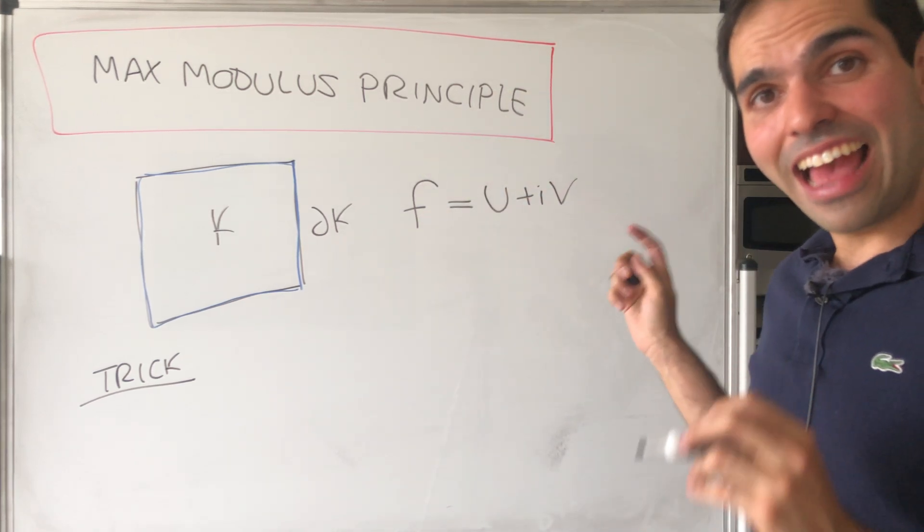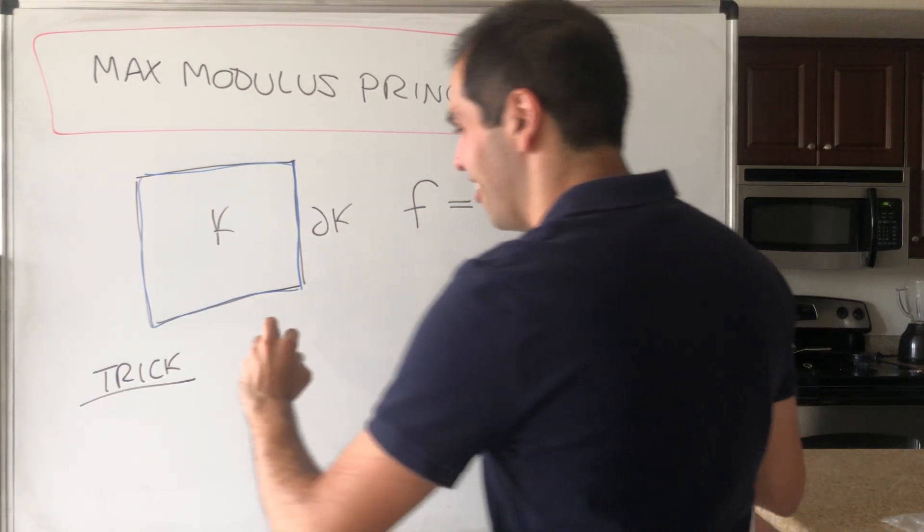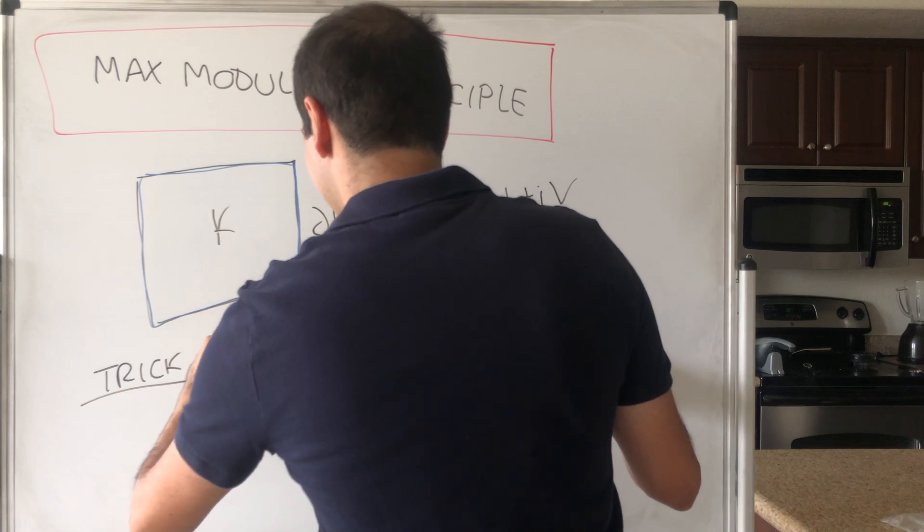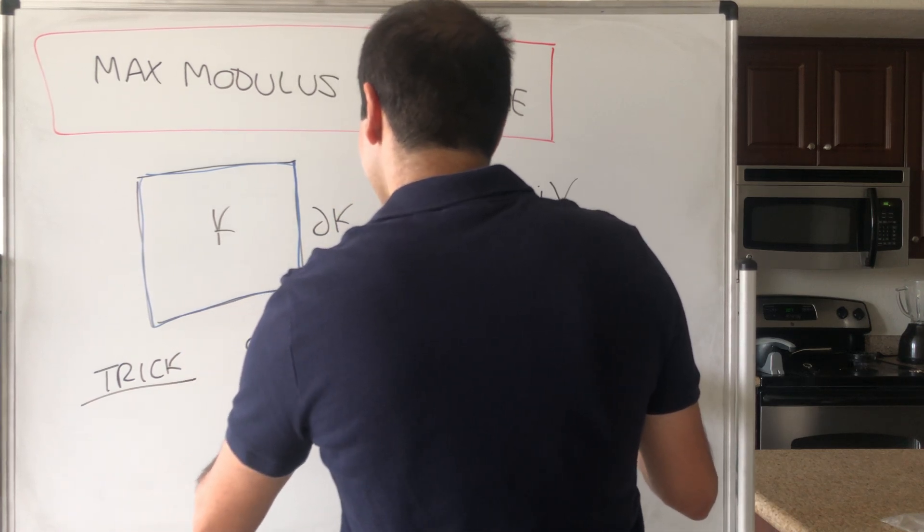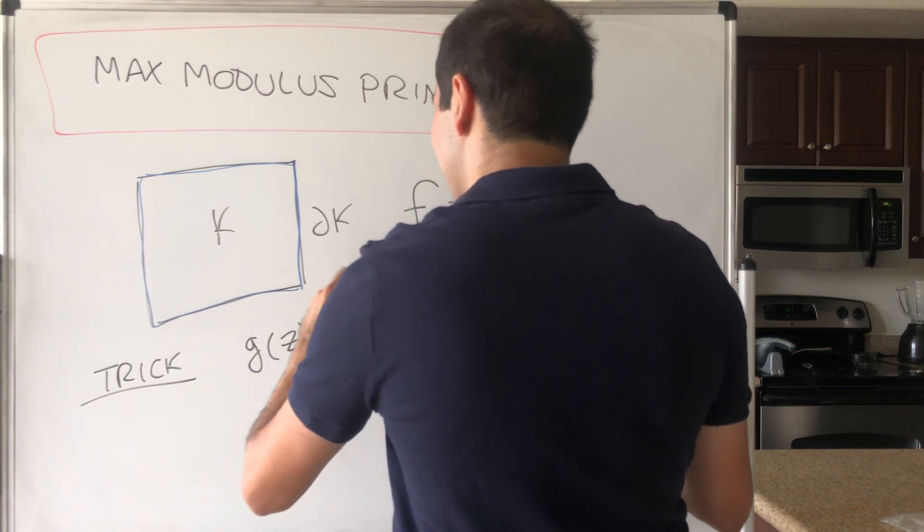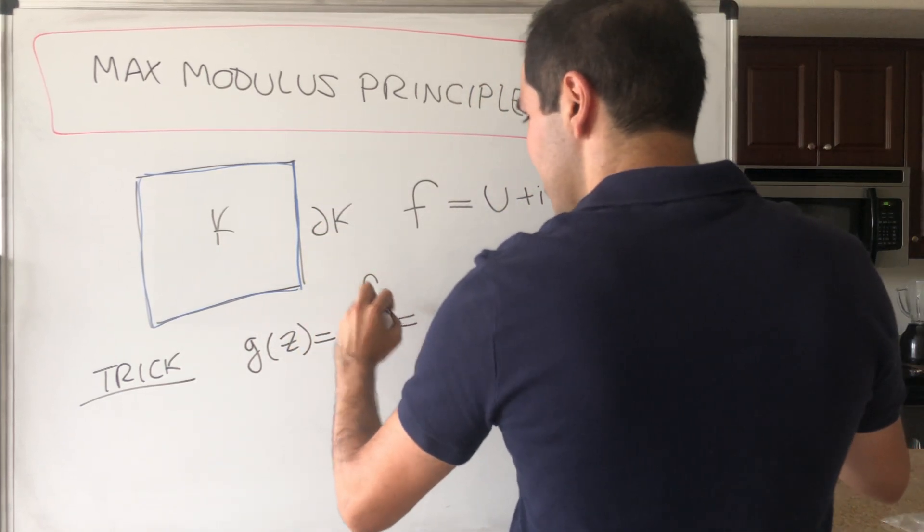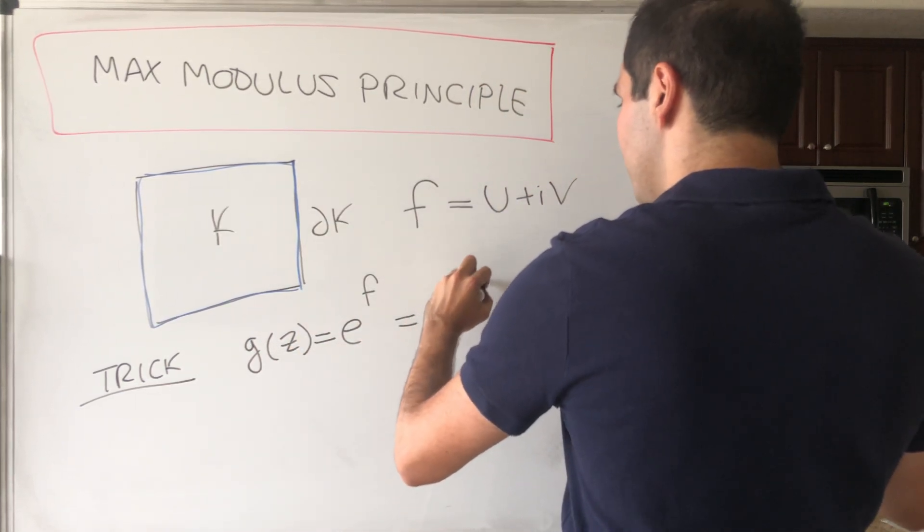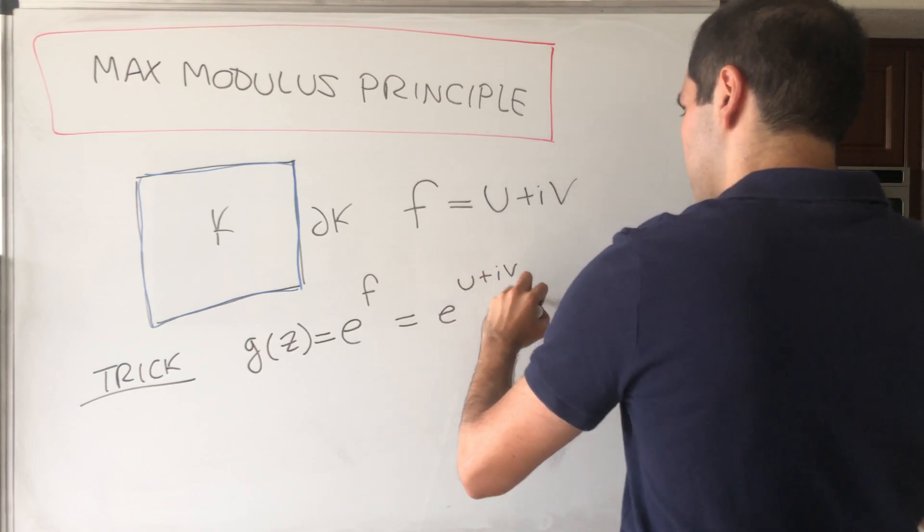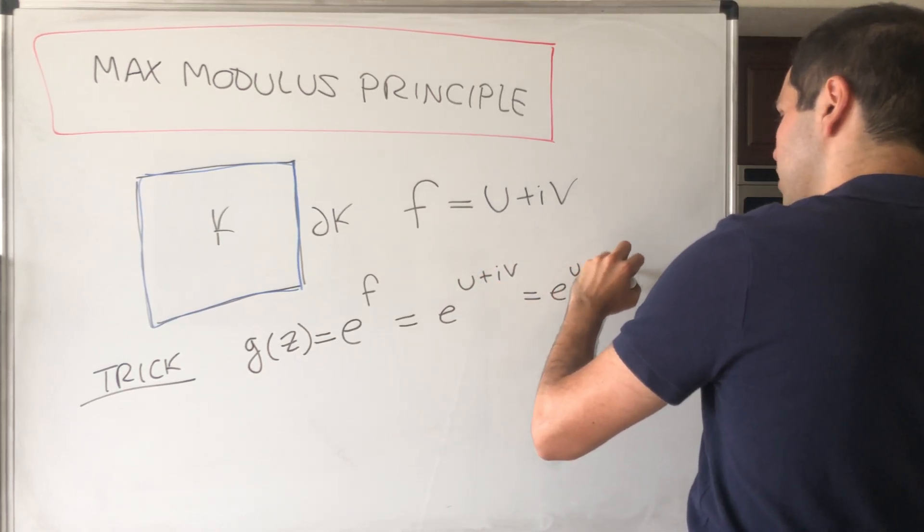So instead of considering f, consider the following function: e^f. It's kind of crazy, because you wouldn't think that e^f would work, but it does. Then e^f is e^(u+iv), and that is e^u and then e^(iv).